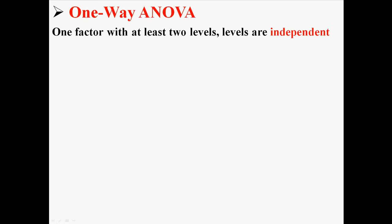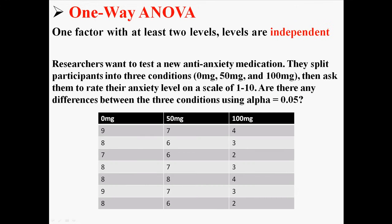Now it is time to begin the one-way ANOVA. A one-way ANOVA, remember, has one factor with at least two independent levels. So here's an example of that. Researchers want to test a new anti-anxiety medication.